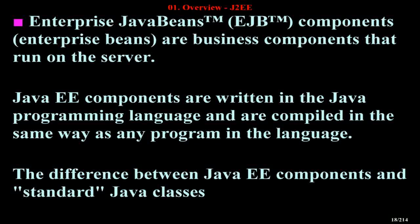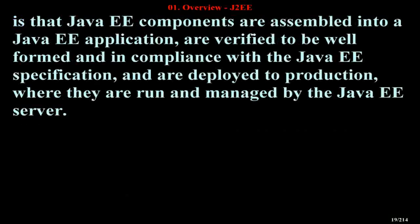The difference between Java EE components and standard Java classes is that Java EE components are assembled into a Java EE application, are verified to be well-formed and in compliance with the Java EE specification, and are deployed to production, where they are run and managed by the Java EE server.